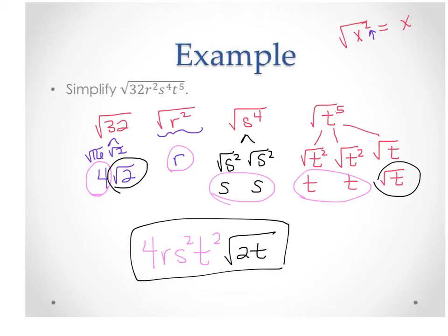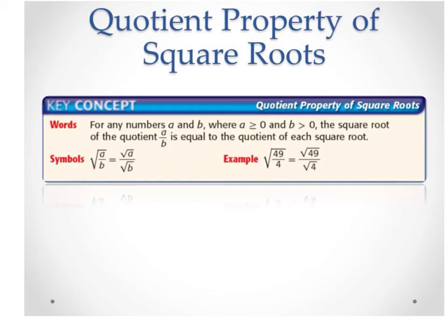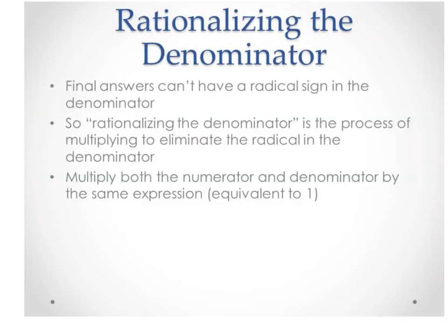We also have a quotient property. If you have a fraction under a square root, you can break it apart into the square root of the top over the square root of the bottom. That is really helpful when simplifying square roots of fractions. Now, the math convention is that you cannot have a radical sign in the denominator of a final answer, so we have to do a process called rationalizing the denominator to get rid of that.